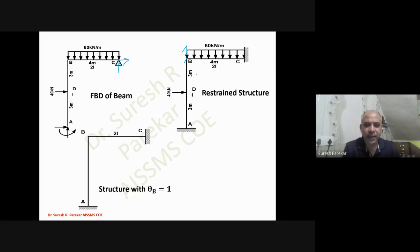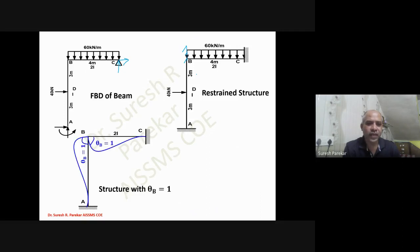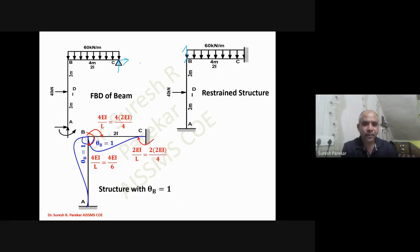Applying θB = 1, we consider members BA and BC. For BC, I = 2I, so the moments are 4EI/6 for both BA and BC, and 2EI/4 for the far end. The non-zero displacement must be applied clockwise.